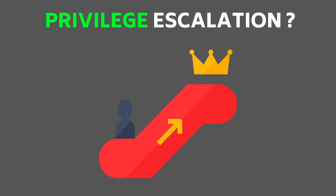Privilege escalation is of two types: one is horizontal privilege escalation, and another one is vertical privilege escalation. These are the two types of privilege escalation. Let me explain them with an example so you can easily understand.